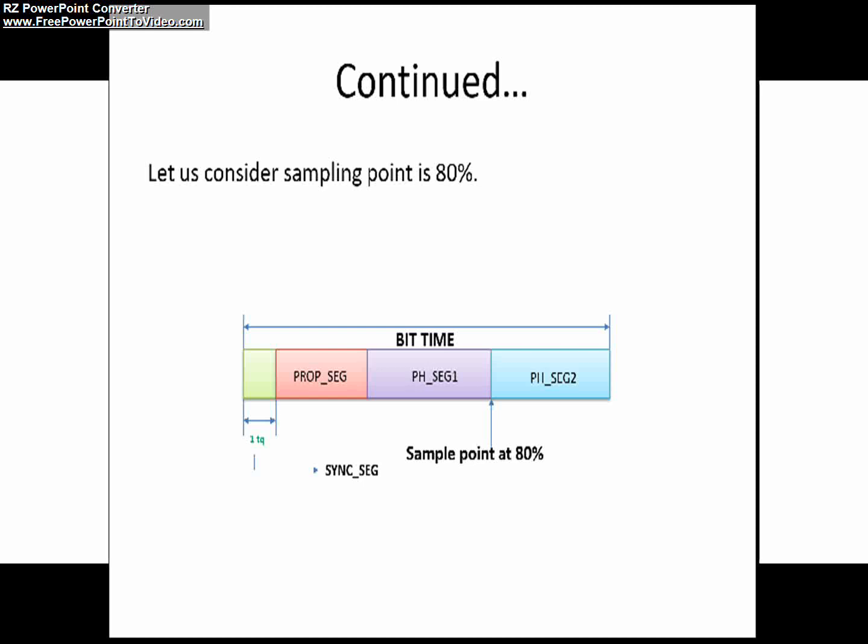Now we will understand the edge phase error with three different cases. Let us consider the edge lies within the synchronization segment, from here to here. As you all know the synchronization segment will be always one time quanta. Hence, if the edge is occurring within this synchronization segment, there will not be any edge phase error. That means the edge phase error E is equal to zero. The bit exactly occurs within the synchronization segment as you can see within this time quanta.